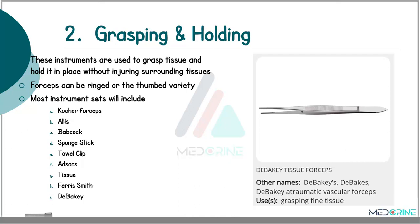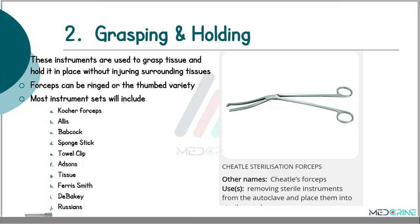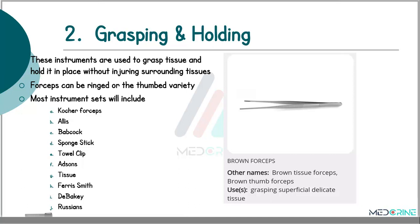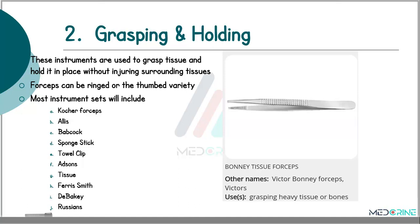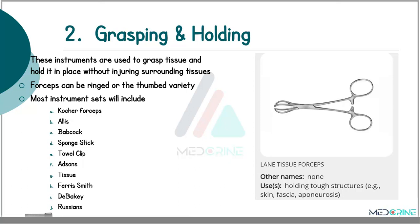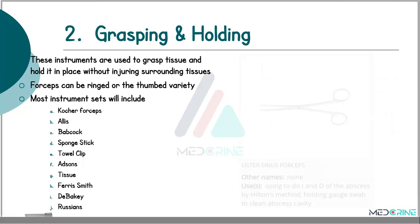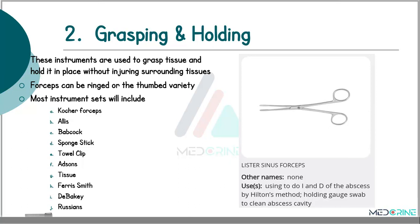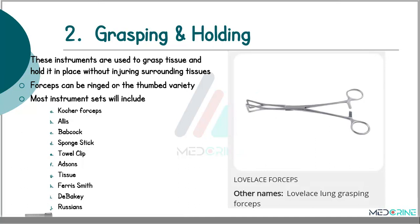We have an atraumatic vascular forceps used to grasp fine tissues. Cheatle sterilization forceps are used in removing sterile instruments from the autoclave and placing them into the sterile surgical field. Brown forceps are for grasping superficial delicate tissues. Bony tissue forceps are for grasping heavy tissues or bones. Lend tissue forceps are used to grasp tough structures, for example skin, fascia and aponeurosis. We have a Lister sinus forceps used to do incision and drainage of an abscess by Hilton's method, and it can also be used to hold a gauze swab to clean the abscess cavity.